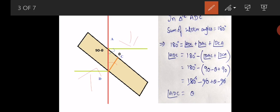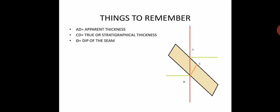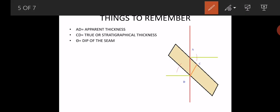The angle made by the vertical of the seam with the borehole will always equal the inclination of the seam. So this is the basic factor to remember. AD is the apparent thickness — it is obtained from the drill hole and is not the true thickness. The true thickness is DC, also called the stratigraphical thickness. Theta is the dip of the seam.